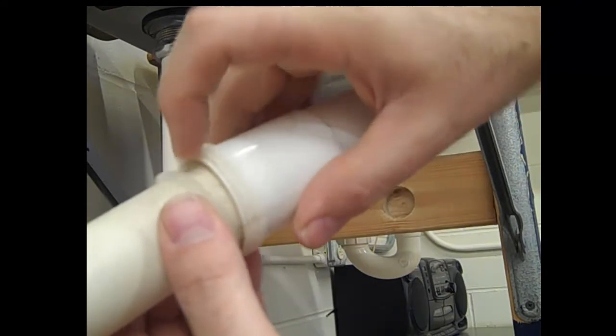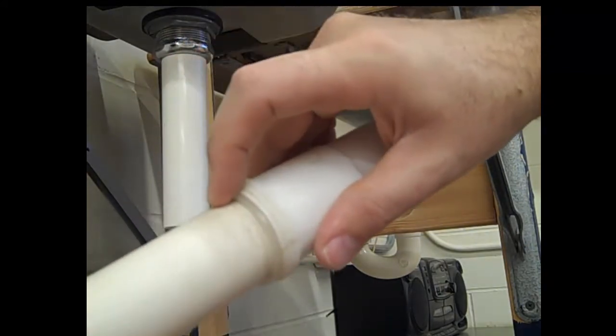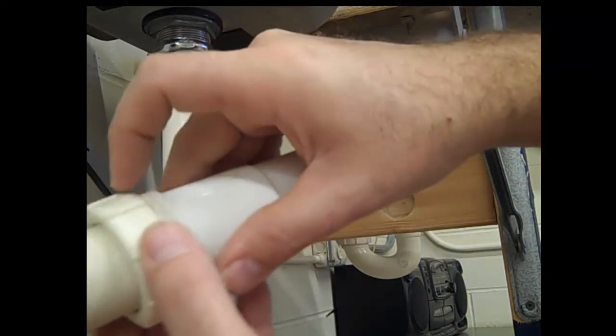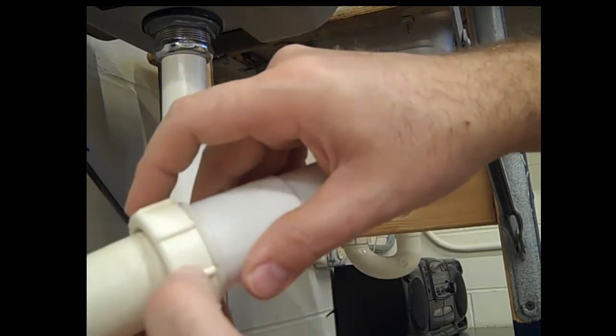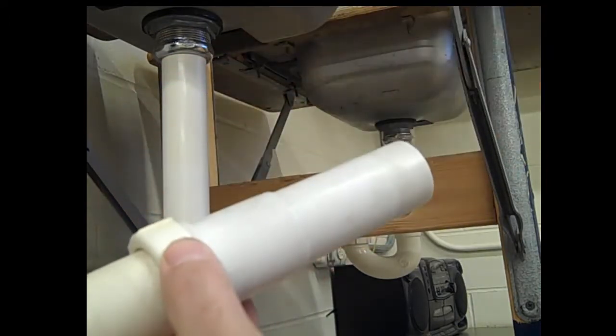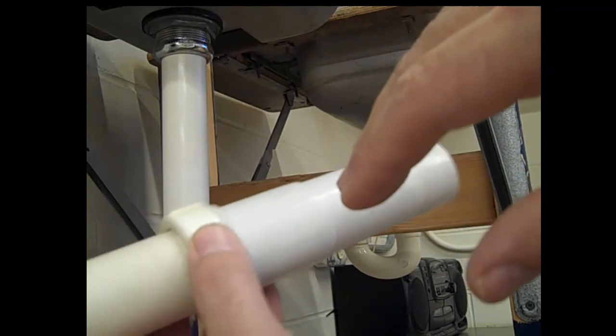The angles of this part and this part meet together. When you bring this together and tighten that nut, it wedges that ring in between those two, creating that water-tight seal.